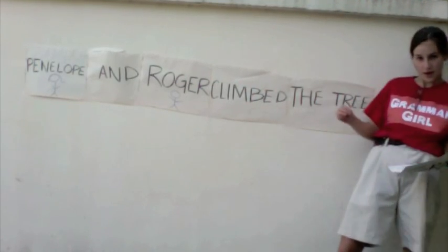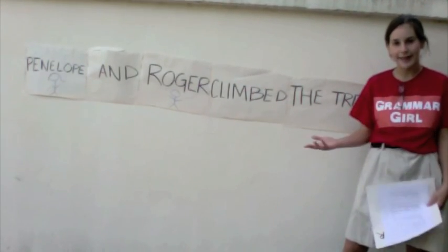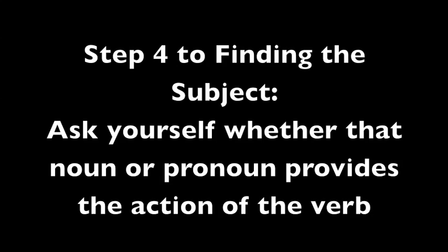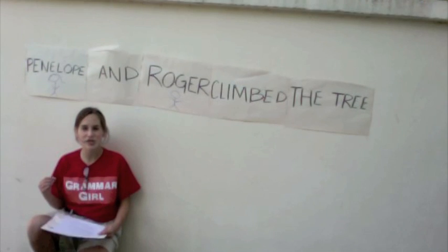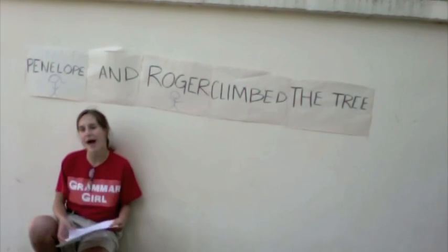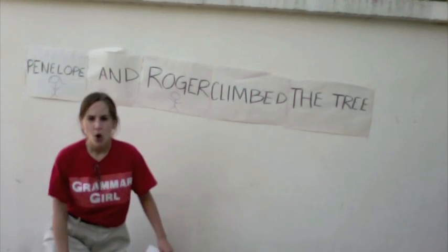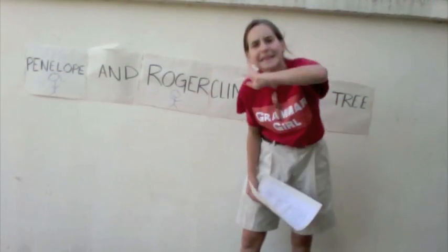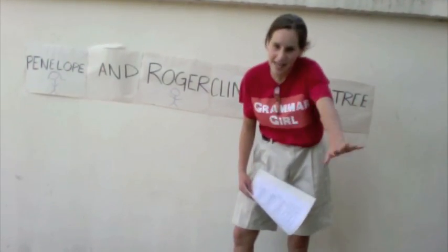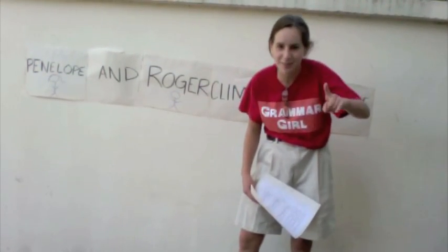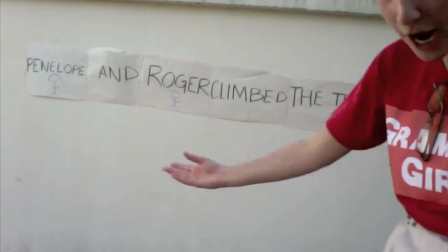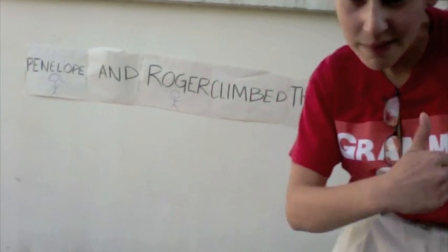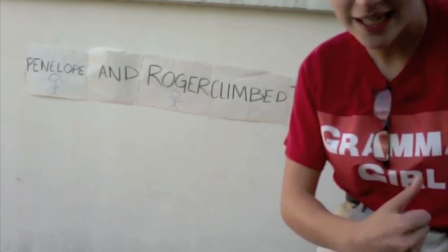The third thing you want to do is see what nouns or pronouns are to the left of the verb. Ask yourself whether that noun or pronoun performs the action of the verb. In this case we don't have one noun — we have two, which is completely, positively, absolutely possible. Congratulations Penelope and Roger, you're our subjects. Grammar can be fun!